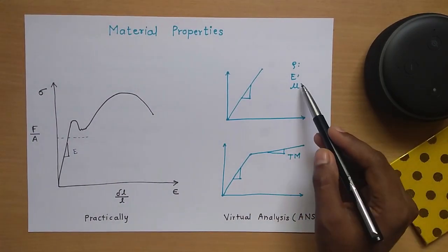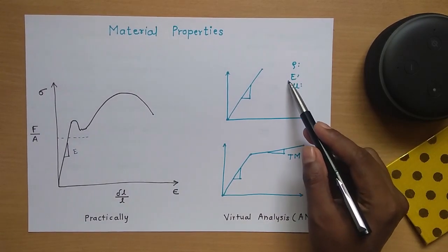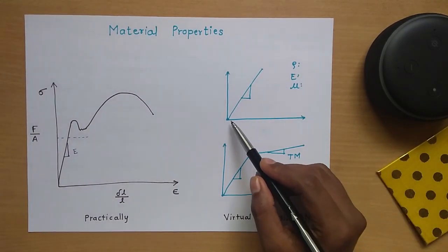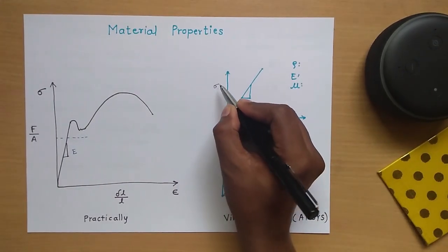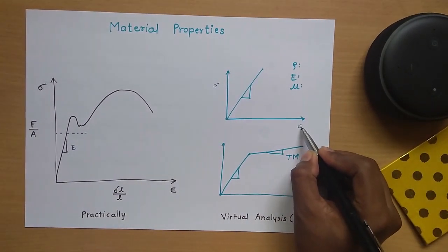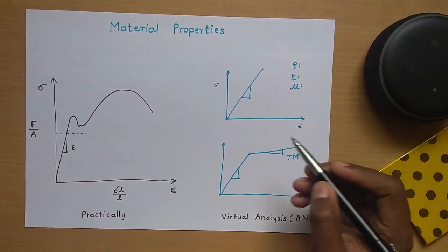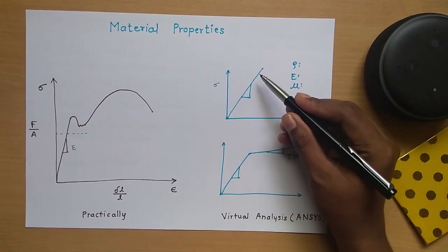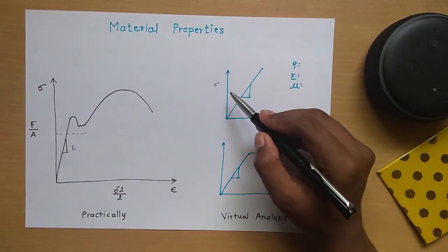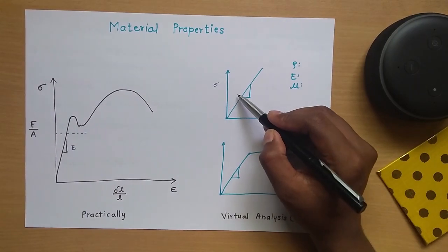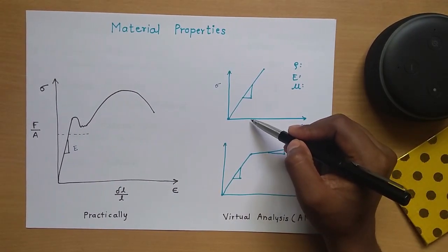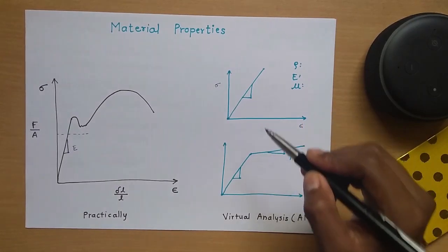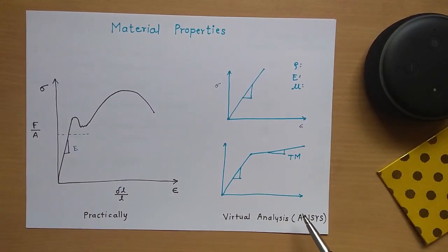We will give these two values — Young's modulus and Poisson's ratio. From these two values, which define the slope, we will get a stress-strain curve. This is stress and here it is strain, so we will get a linear graph. When we apply force, we will get some deformation, and this calculation will be done by the ANSYS software.